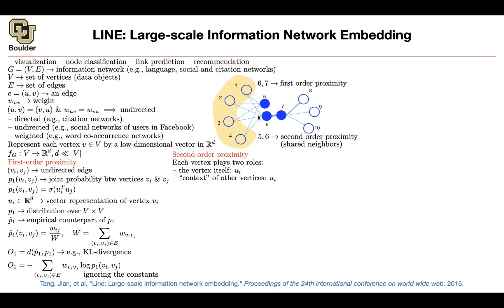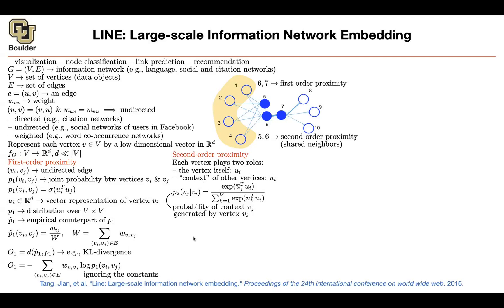Each vertex can play two roles — it could be the vertex itself (u_i) or the context of other vectors (ū_j), like a person being themselves or the sibling of someone else. v_i corresponds to u_i (the vertex itself) and ū_j corresponds to the context. You write a softmax over all vertices in the graph, modeling the probability of v_j appearing in the context of v_i.